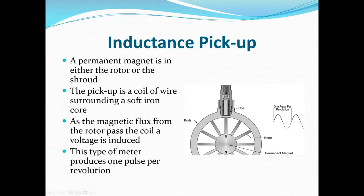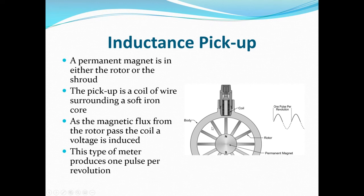Inductance style pickup: the permanent magnet is in the rotor or shroud — the spinning part. The pickup is a coil of wire surrounding a soft iron core. The flux from the rotor passes through the coil and voltage is induced. This type produces one pulse per revolution — there is a single magnet at one point on the fins or shroud, and every time it comes around, it gets counted once. That's the big difference: reluctance counts every blade, inductance counts once per revolution.